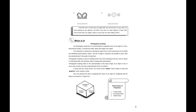Now let's proceed to the what is it. We will study more about orthographic drawing. When we say orthographic drawing, it is a projection or representation of separate views of an object on a two-dimensional surface. It reveals the width, depth, and height of the object. It came from the Greek words 'orthos,' which means to write, and 'grapos,' which means to draw.